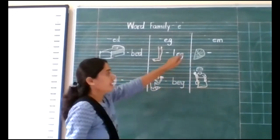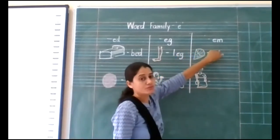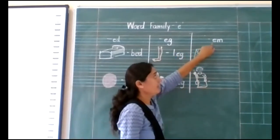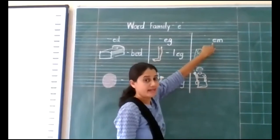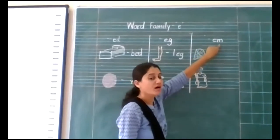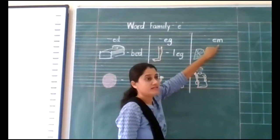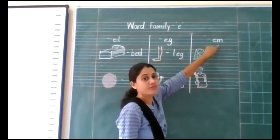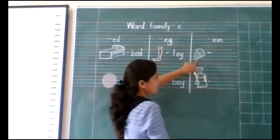And the next sound is the EM sound. Which sound? EM sound. E says E and M says M. E and M together make the EM sound.